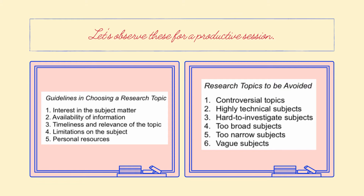Take note of the research topics to be avoided. Number 1: Controversial topics. Number 2: Highly technical subjects. Number 3: Hard-to-investigate subjects. Number 4: Too broad subjects. Number 5: Too narrow subjects. Number 6: Vague subjects. In the meantime that you are still students, try to avoid these topics.